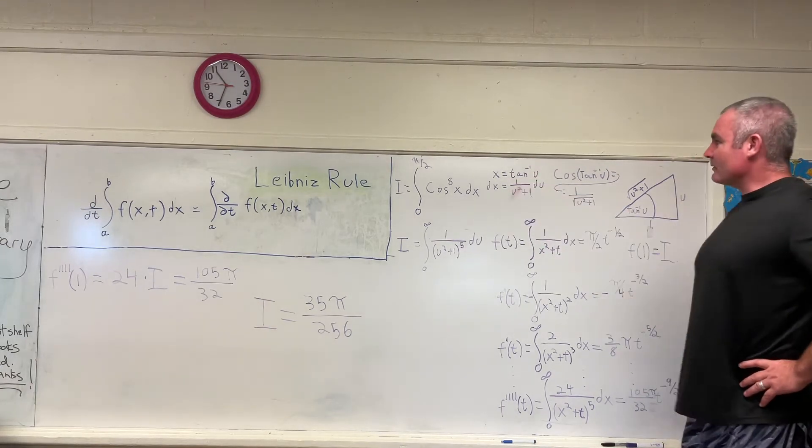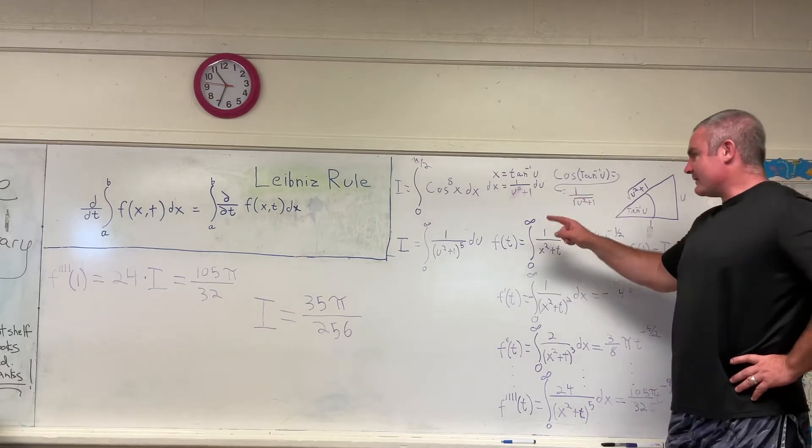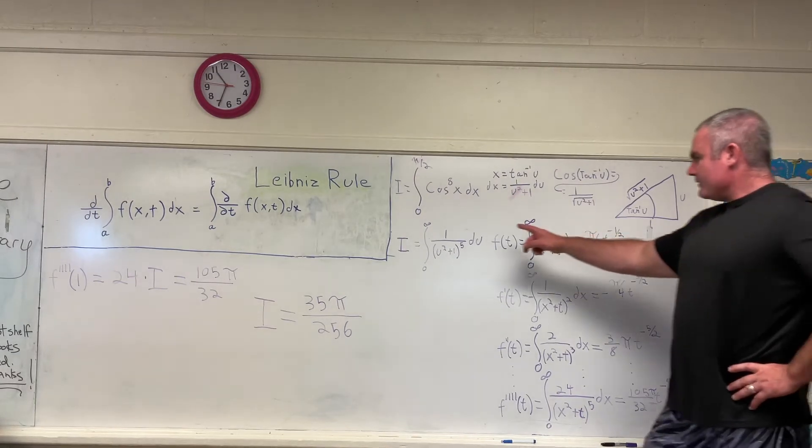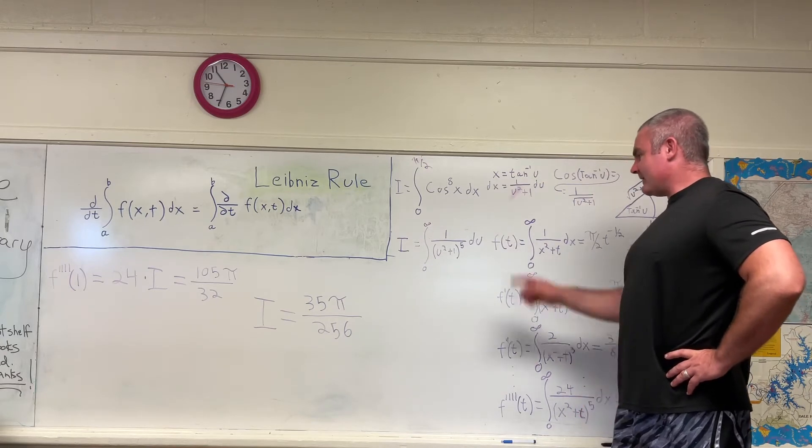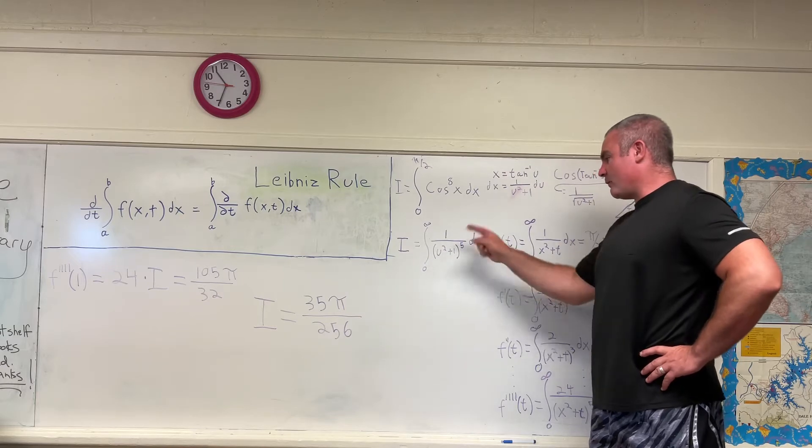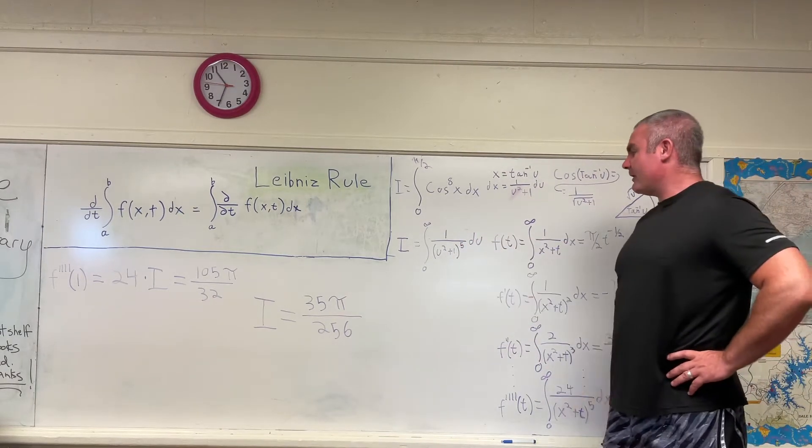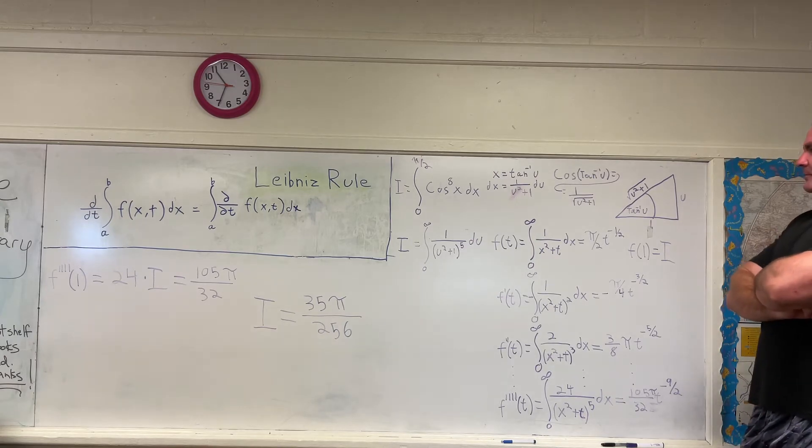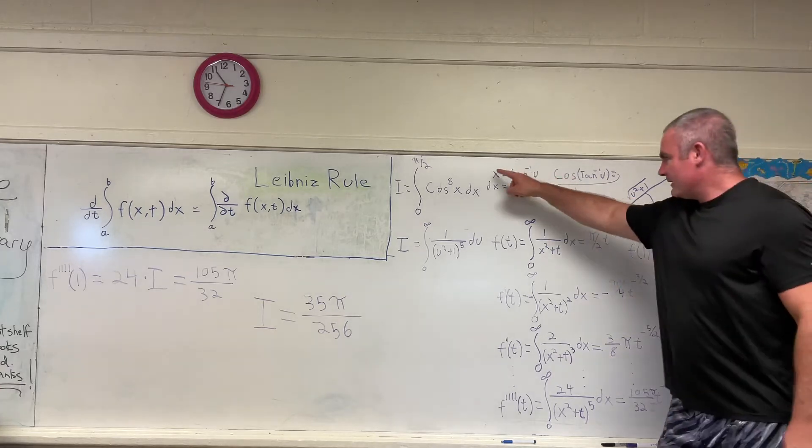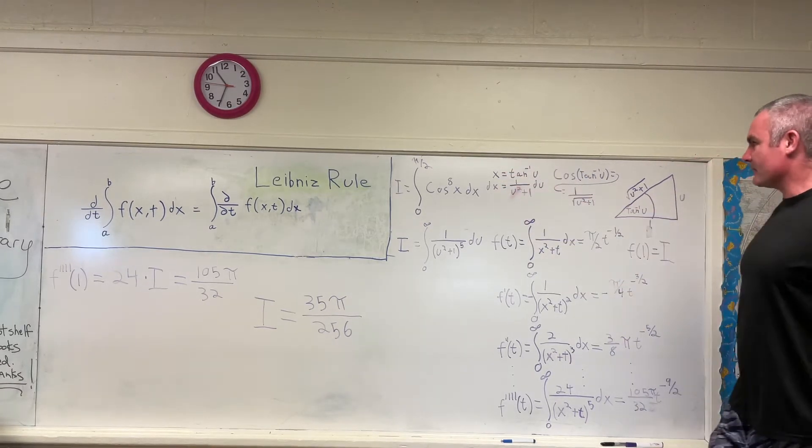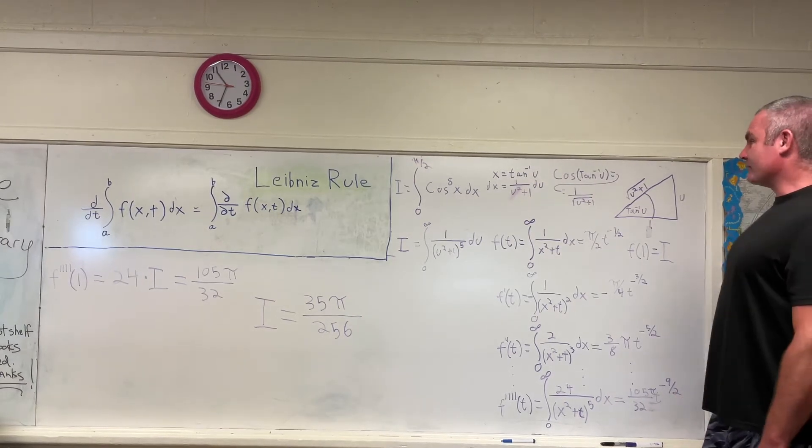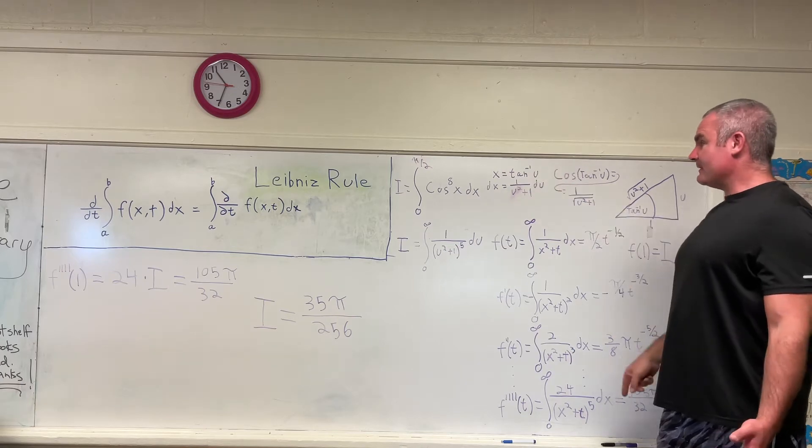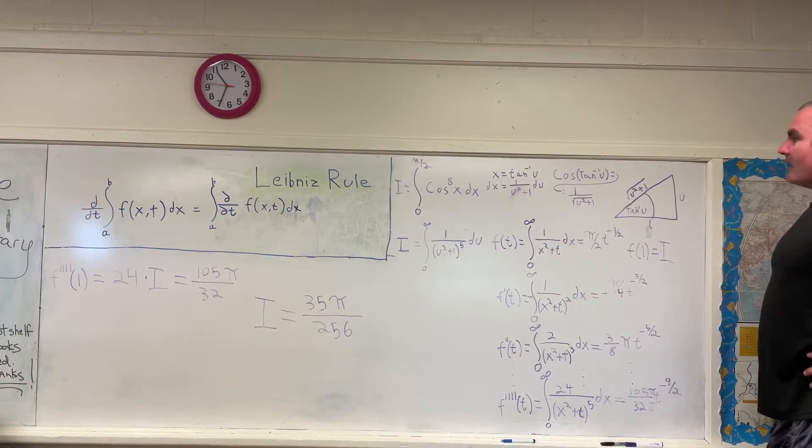The substitution I make is that x is equal to the inverse tangent of u, therefore dx is equal to 1 over u squared plus 1 du. Now, when you make that substitution, what you get is the following, that i is equal to the integral from 0 to infinity of 1 over u squared plus 1 all to the 5th du. And I'm gonna show you kind of how I did that. So the bounds of integration should be obvious. If you have x equal to 0, you know that u is equal to 0 because 0 is equal to the inverse tangent of 0. And if you have x equal to pi over 2, you will get u is equal to infinity because the inverse tangent of infinity is equal to pi over 2. So that's how I got my bounds of integration.